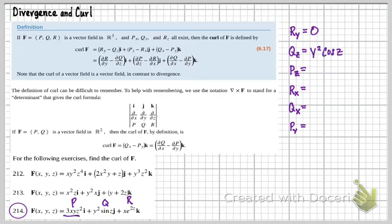Then my pz is going to be 6xyz. And then rx is going to be e to the 2z. And then my qx is going to be 0. And then the py is going to be 3xz squared.